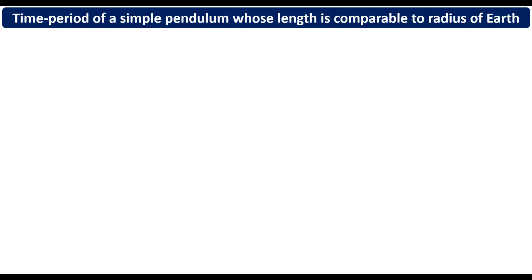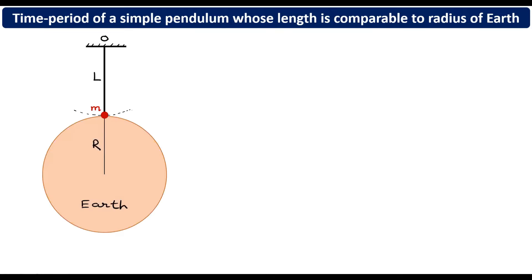Let's learn how to find the time period of a simple pendulum whose length is comparable to the radius of Earth. We have Earth of radius R, the center of the earth, and this is a long simple pendulum suspended from point O. The length is L, mass of the bob is m, and this L is comparable to the radius of the earth.